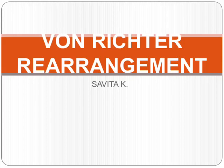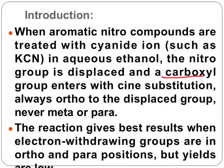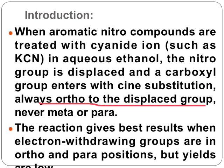In this video I am going to explain the Von Richter rearrangement. This rearrangement is the conversion of aromatic nitro compounds into the corresponding carboxylic acid group, carried out in the presence of cyanide ion such as potassium cyanide in aqueous ethanol. The main feature is that the carboxyl group enters with cine substitution — it will always be ortho with respect to the leaving group, and never meta or para.